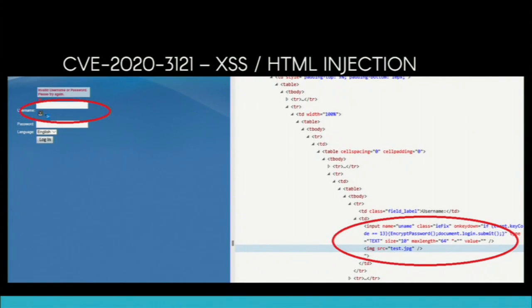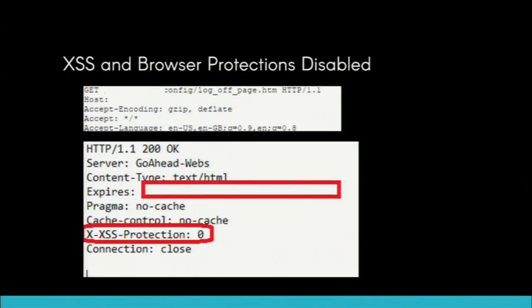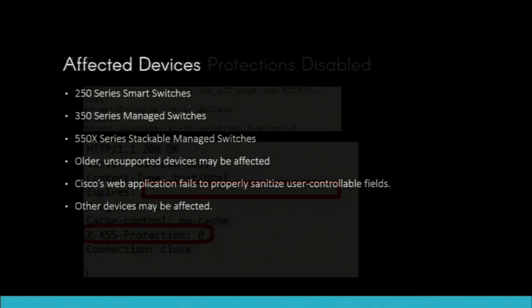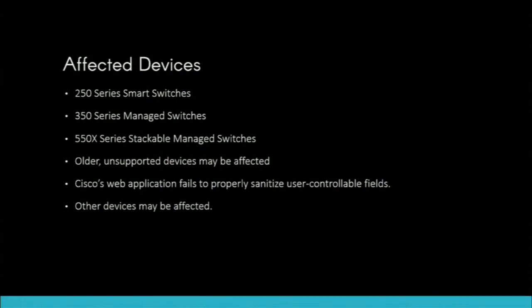You're probably asking yourself, Ken, why did you get 20 minutes at ShmooCon to talk about cross-site scripting? We're getting there. Another thing Cisco did is they actively disabled the cross-site scripting protection on the log-off page, making it easier to execute these types of attacks — just GET requests from the log-off page. Cisco has stated they're not going to be able to fix this issue specifically. Affected devices include the 200 series, 300 series, and 500 series. Older unsupported devices may also be affected. This all stems from Cisco's web application failing to sanitize user-controllable fields.